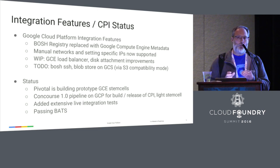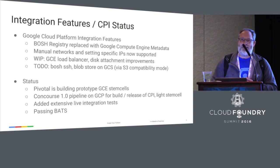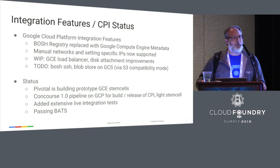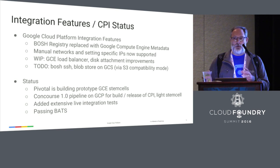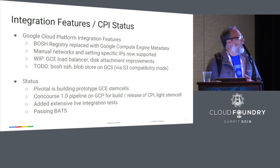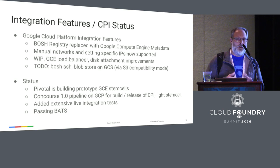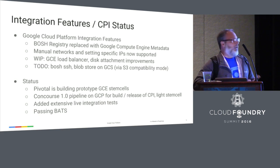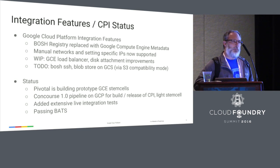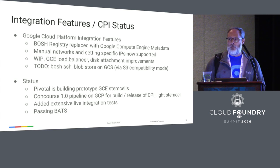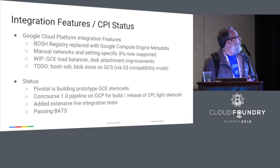One of the things we did was remove the Bosh registry and replace it with the GCE metadata service. GCE has writable metadata, so it's a good way to pass information back and forth between the virtual machines in the environment and the director. That was suggested by Ferdi or Dimitri — it makes things more scalable and resilient and leverages infrastructure innovations in GCE. Manual networks have just recently been added, along with the ability to specify private IPs, and subnets in GCE — all of those things have now been merged into the CPI.